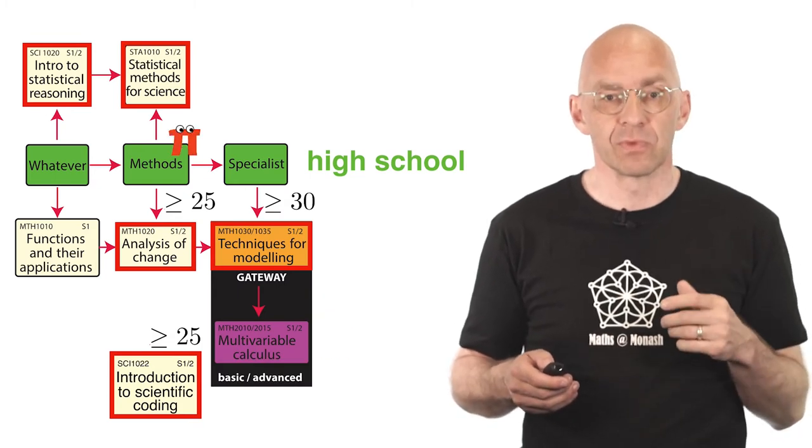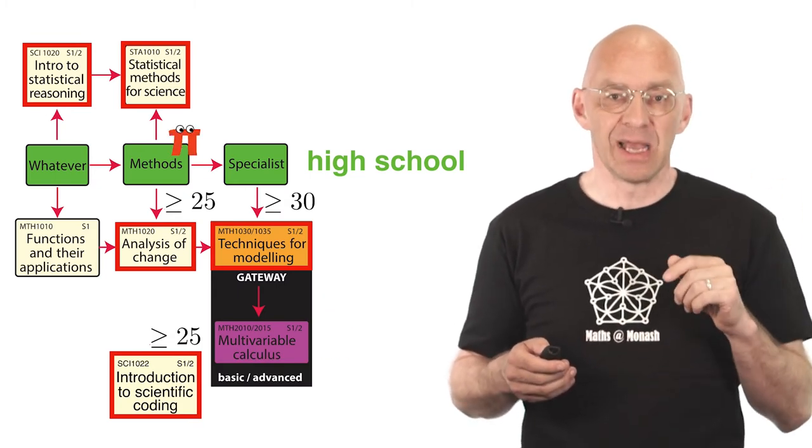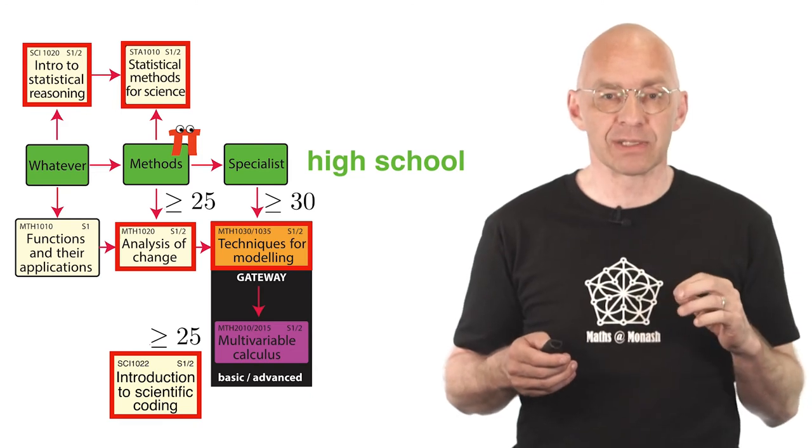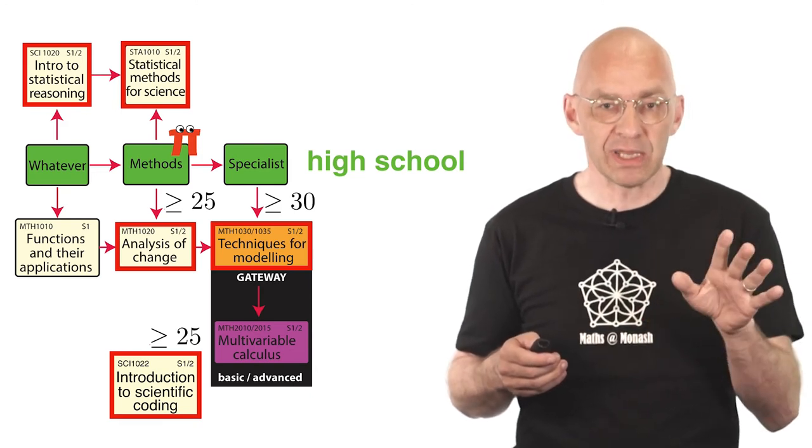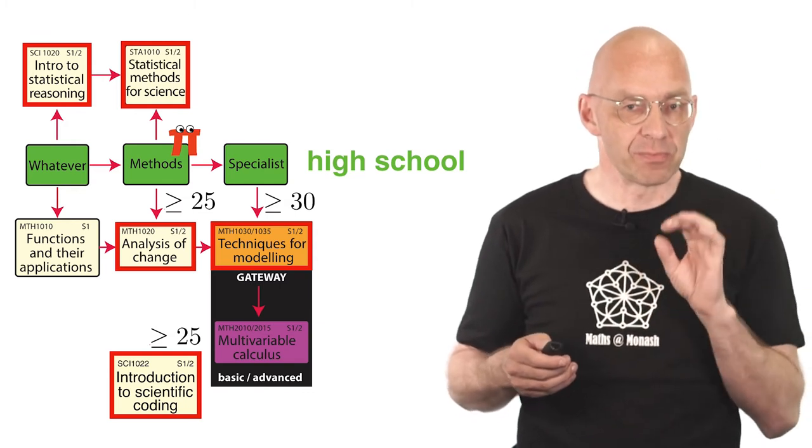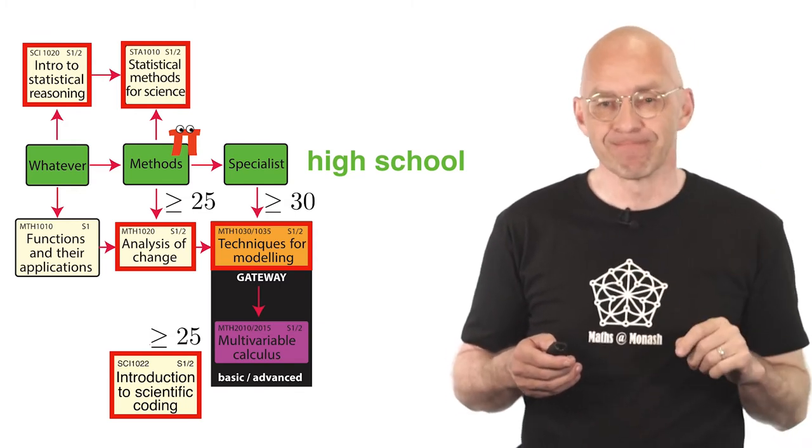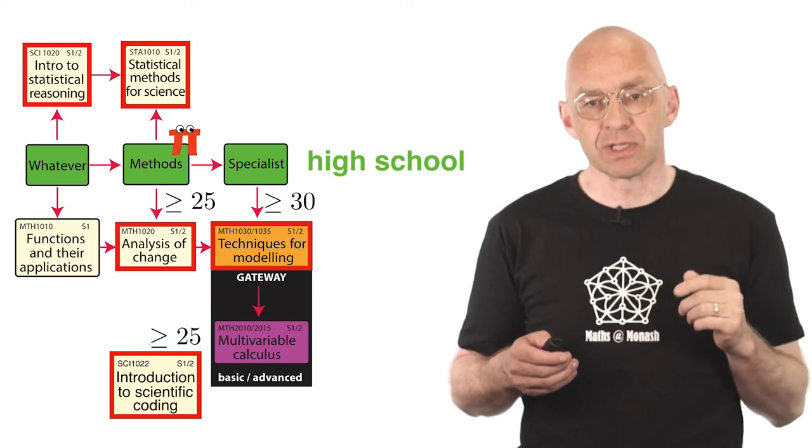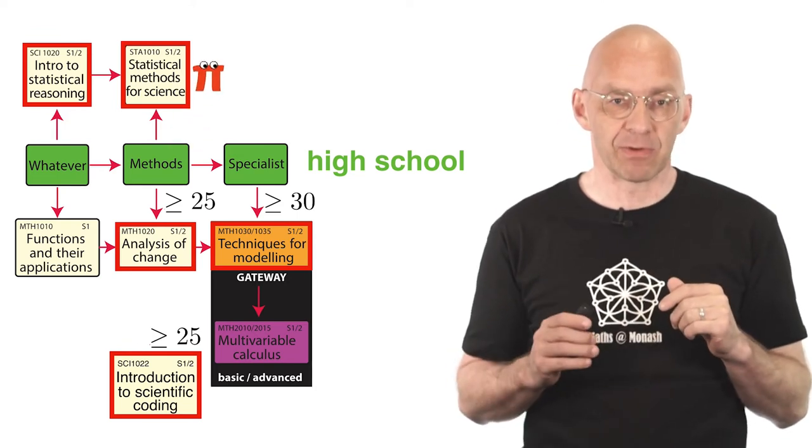Or we're still talking about you in the methods box. Maybe you just want to get the science maths requirement out of the way and anticipate that some stats will get you closer to your Nobel Prize in physiology. Then you should go for the unit statistical methods for science.